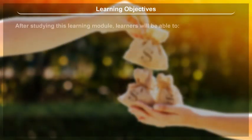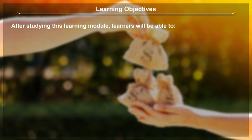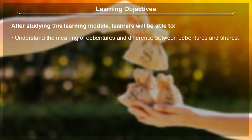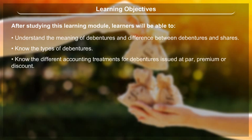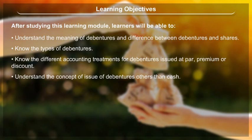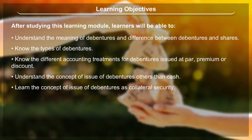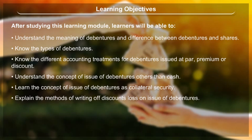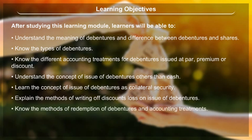Learning Objectives: After studying this learning module, learners will be able to understand the meaning of debentures and the difference between debentures and shares. They will know the types of debentures, the different accounting treatments for debentures issued at par, premium or discount, the concept of issue of debentures other than cash, and the concept of issue of debentures as collateral security. They will also learn methods of writing off discounts on issue of debentures, methods of redemption of debentures and their accounting treatments, and the concept of sinking fund.